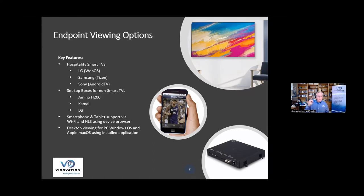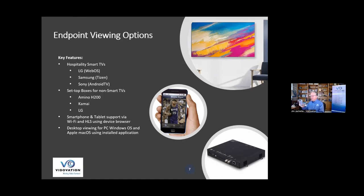We also use Amino set-top boxes, the Amino Kamae box, or LG boxes, as well as smartphones and tablets. We can go over Wi-Fi, but that usually facilitates transcoding to HLS. HLS adapts the bit rate — it makes several copies of the stream at high, medium, and low resolution or bit rate, and the streams are chopped into segments. If I'm on my cell phone watching on Wi-Fi and I move into a dead spot, the HLS will adapt so the video doesn't drop out. HLS works really nicely over Wi-Fi.